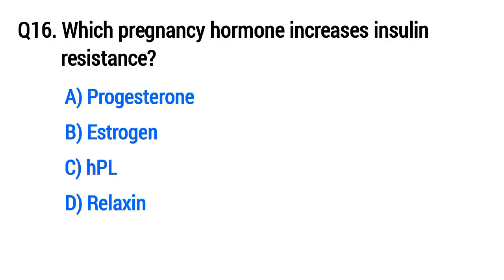Question No. 16: Which pregnancy hormone increases insulin resistance? The right option is C, HPL (human placental lactogen).